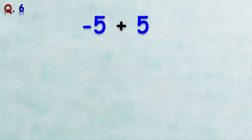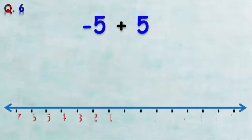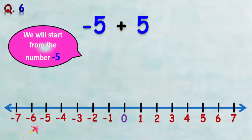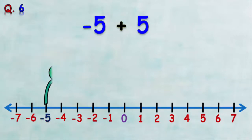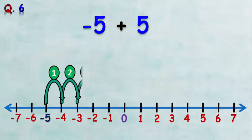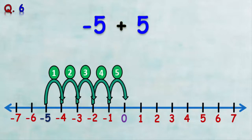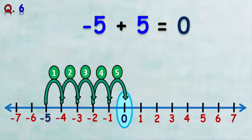Now we want to find the sum of negative five and five. We start at negative five on the number line and make five forward jumps: one, two, three, four, five. We arrive at zero. So the sum of negative five and five is zero. Don't forget that zero is the additive inverse result.